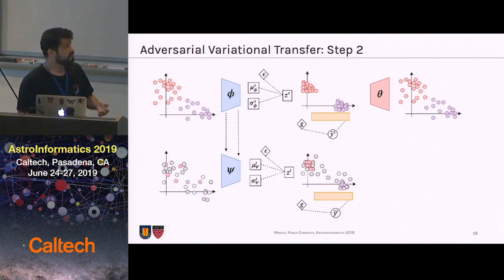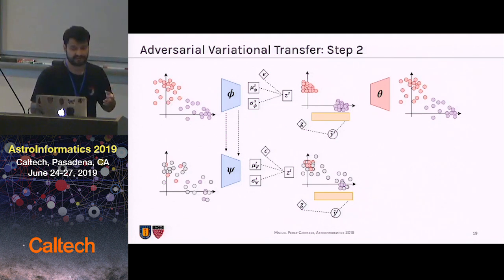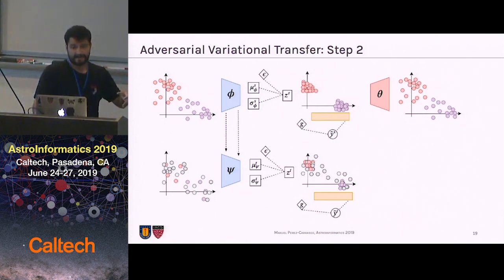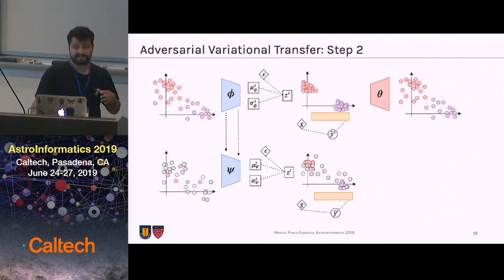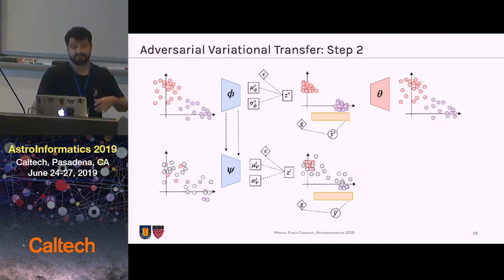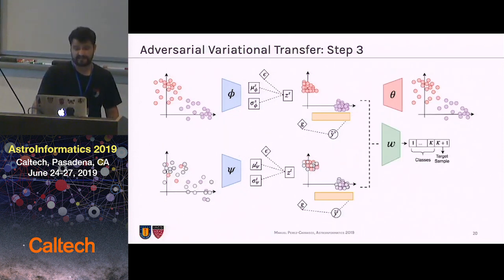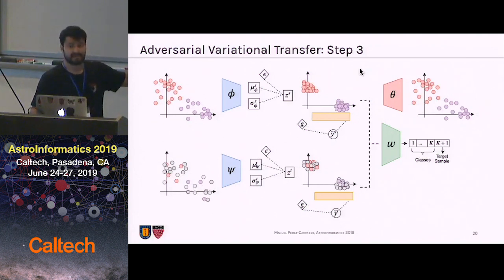Then we use the model trained on source as a prior or previous knowledge for the target, and we map labeled and unlabeled samples of the target into the right Gaussian mixture component. We expect that using the previously trained network on source plus the labels we have in the target, the unlabeled samples of the target will fall nearby the right Gaussian mixture component. An important thing to notice is that as more labels we have on the target domain, more unlabeled samples will fall in the right Gaussian mixture component, so the more labels we have, the better we perform. Finally, we use a discriminator distinguishing if a sample comes from one of the source classes or was generated by the target encoder, and doing that, we align each class distribution independently.